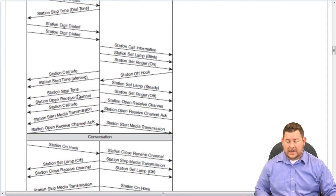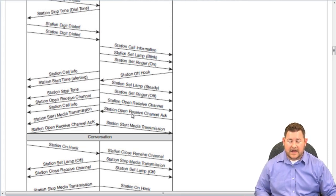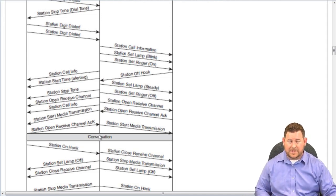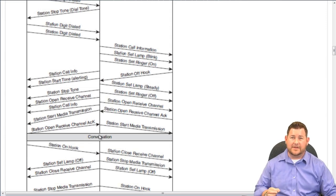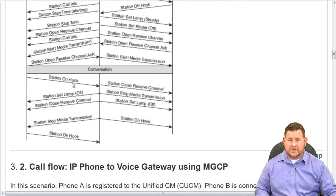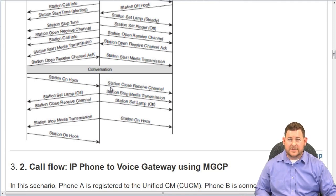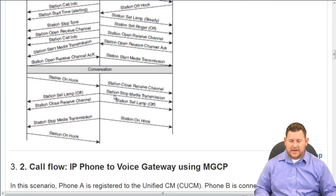The tone is stopped, and then the open receive channel message goes between those two phones. You get an open receive channel message acknowledge, and then media transmission can start. The RTP ports are established through those messages. When the call ends — user A hangs up, that on hook message is sent to CUCM, CUCM instructs Phone B to close the receive channel, set the station lamp to off, stop the media transmission, and then everybody's on hook.